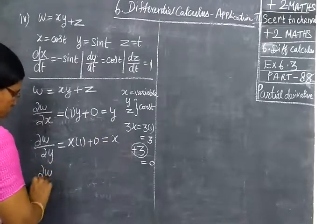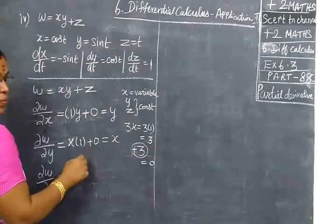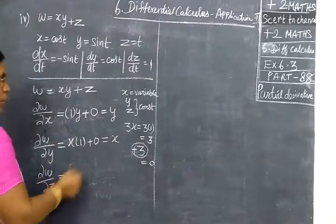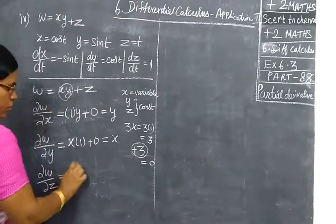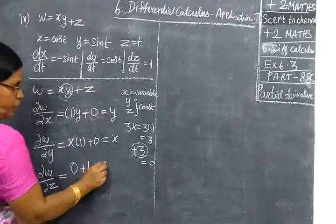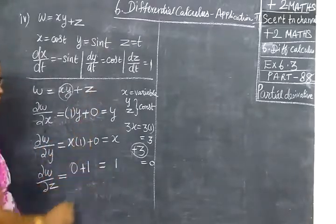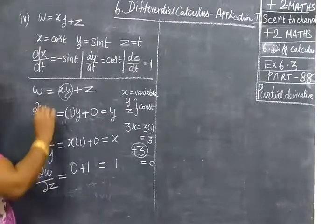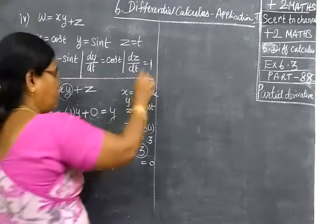Next, ∂w by ∂z. Now we are partially differentiating. Then we have 0, so 0 plus, this is 1. Differentiation is 1. So equal to 1. Now same rule.